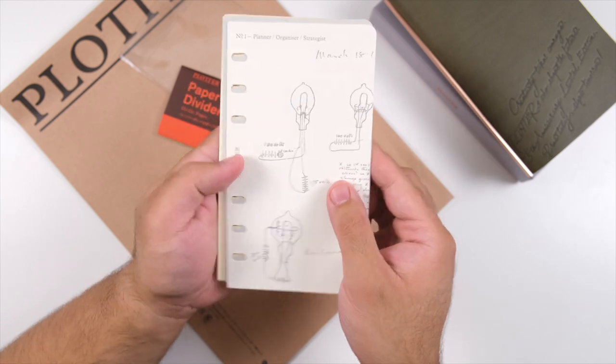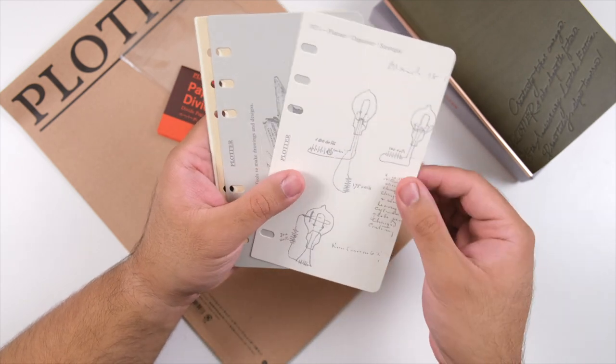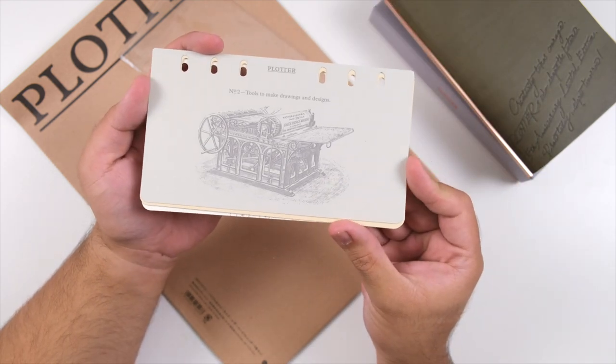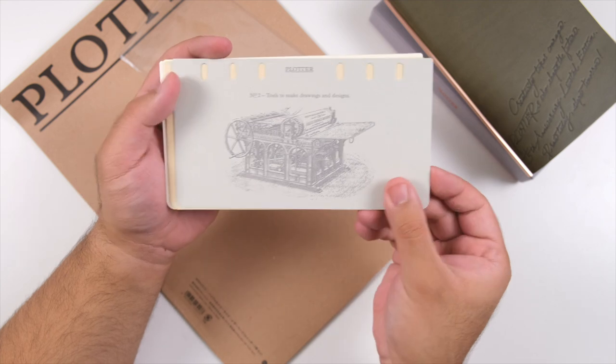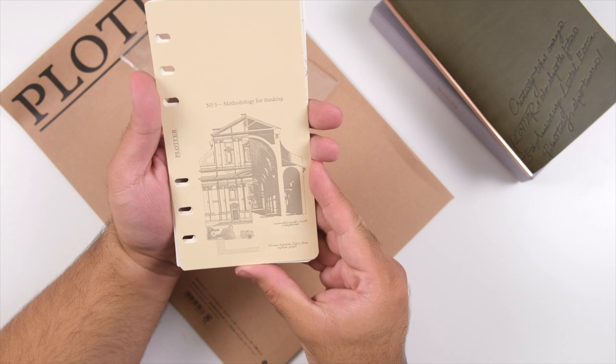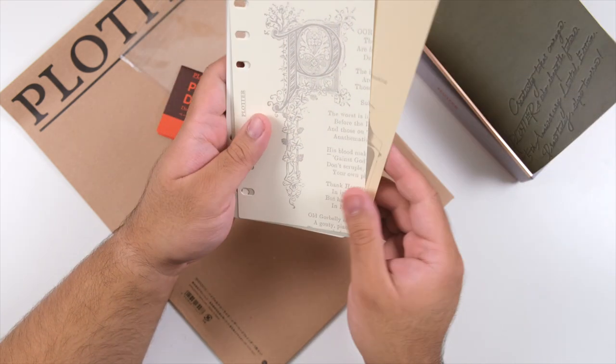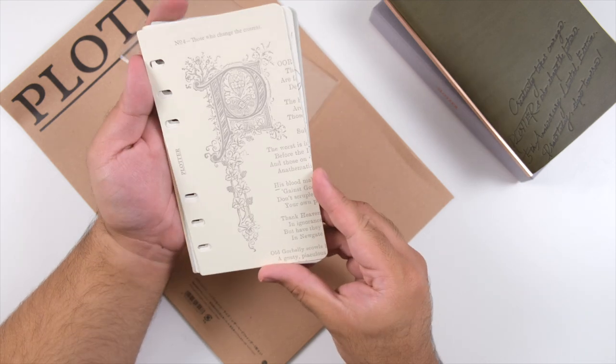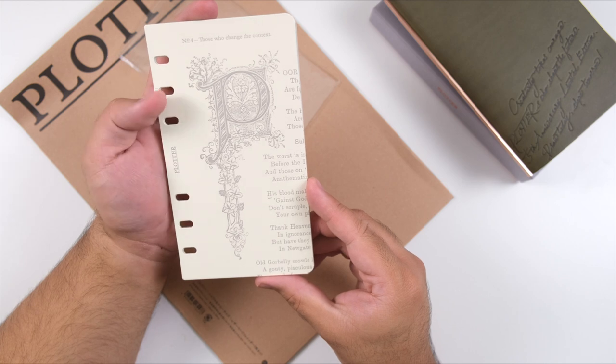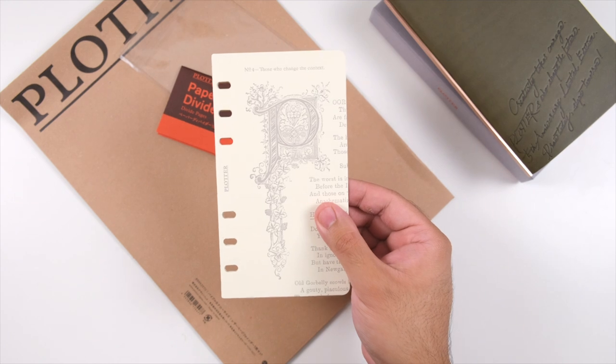The next thing I purchased is this paper divider set. I really wanted this because it's letterpress and I'm a sucker for anything letterpress. If you don't know what letterpress is, it's the older technology of printing where you use these large metal dies to imprint a deboss with some ink on paper.